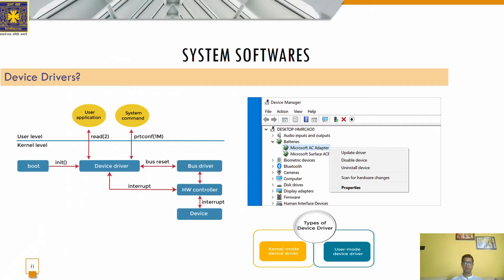First, device drivers. When you get a peripheral device such as a printer, keyboard, or modem, the device comes together with a driver which needs to be installed before the device starts working. As soon as we install the driver software into the computer, it detects and identifies the peripheral device and we become able to control it. A device driver is the piece of software that allows your computer's operating system to communicate with the hardware device.